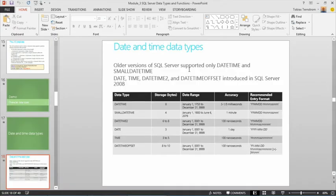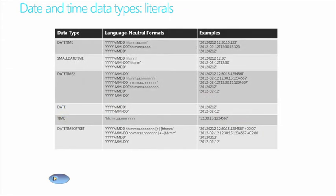Date and time literals support language-neutral formats down to milliseconds. DateTime2 and Time go down to 100 nanoseconds in precision, which is the maximum. These new data types were introduced in 2008 and are more efficient if you only need to store a date or a time component.